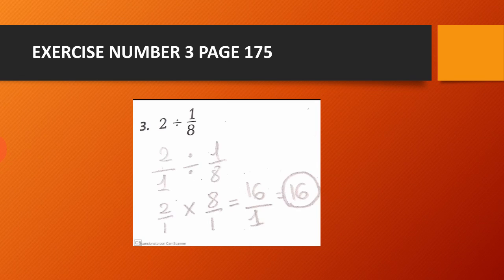So we have 2 over 1 times 8 over 1. 2 times 8 equals 16, and 1 times 1 equals 1. So we have 16 over 1. The result of 2 divided by 1 over 8 is equal to 16.